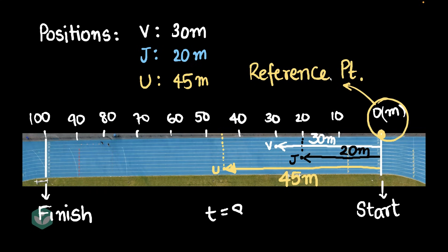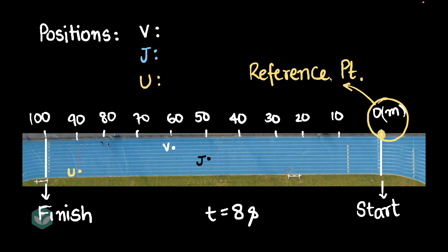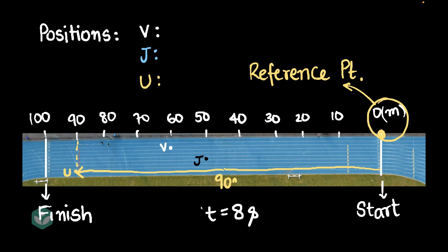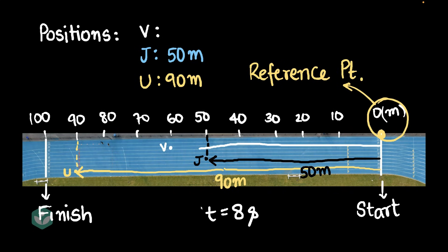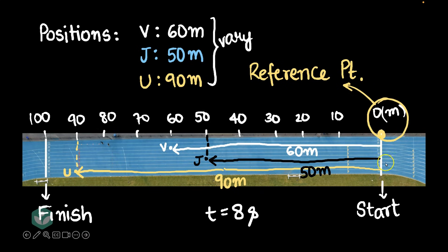At eight seconds, everybody has run further ahead — Usain is almost at the finish line. Checking positions at eight seconds: Usain has run 90 meters, Joel has run 50 meters, and Vibhor has run 60 meters. Notice that as time passed, the positions vary — they keep increasing because the distance run from our reference point, the start line, has increased. But though the positions vary, the reference point itself is fixed.